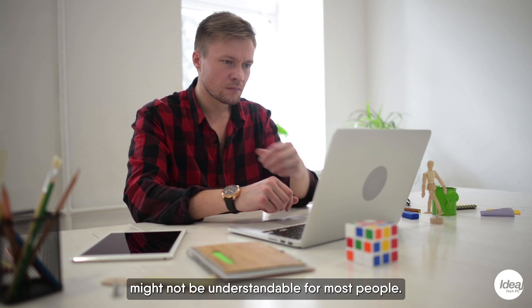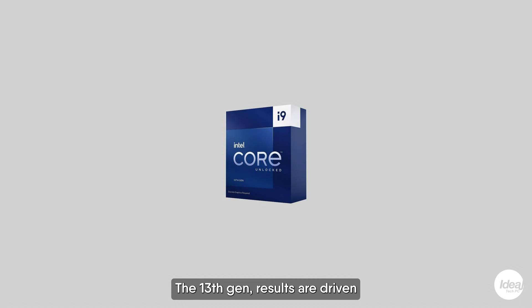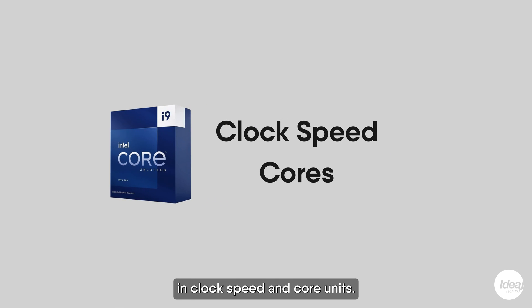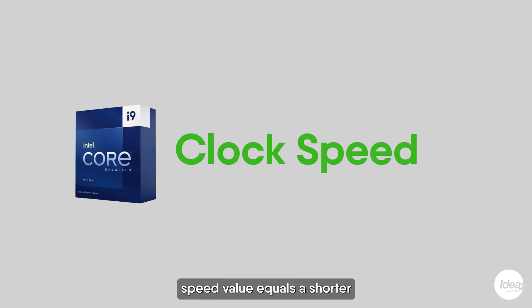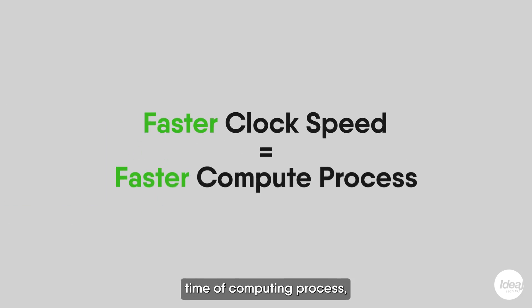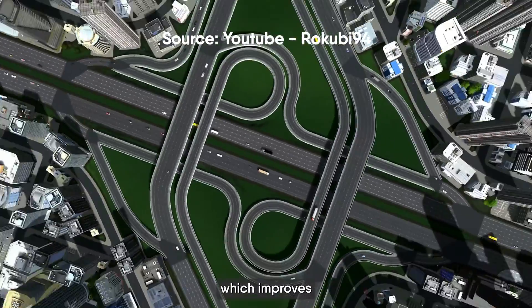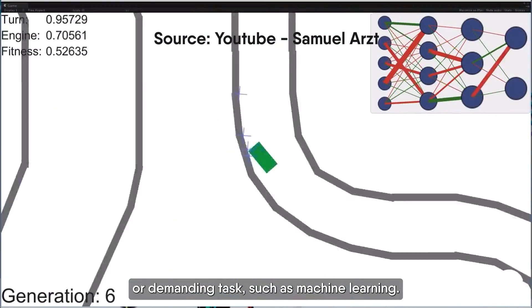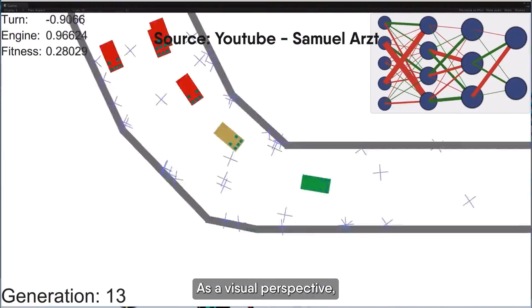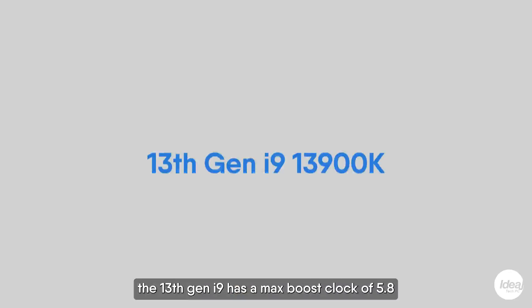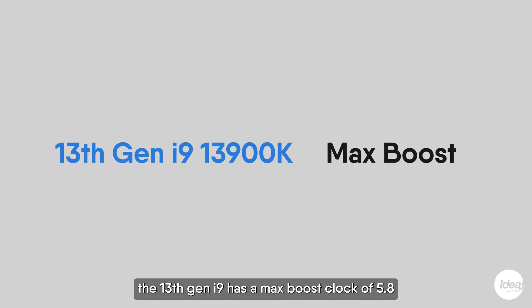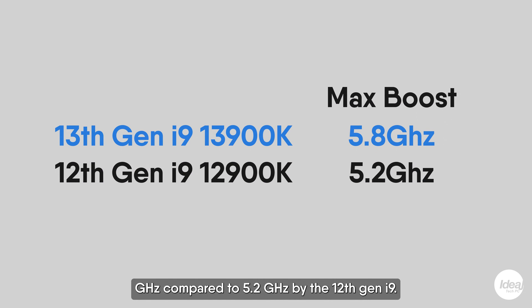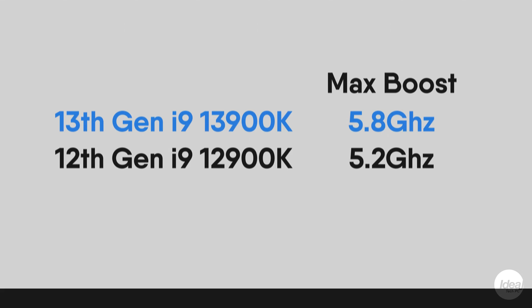However, the results alone might not be understandable for most people. The 13th Gen results are driven by a significant increase in clock speed and core units. A higher clock speed equals a shorter time for the computing process, which improves games such as Cities Skylines or demanding tasks such as machine learning. As a visual perspective, the 13th Gen i9 has a max boost clock of 5.8GHz compared to 5.2GHz by the 12th Gen i9.